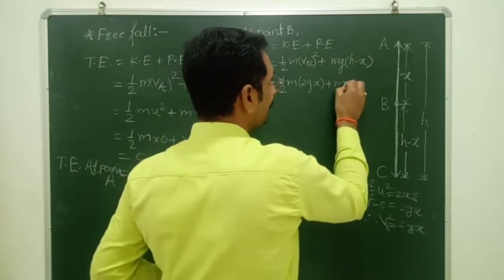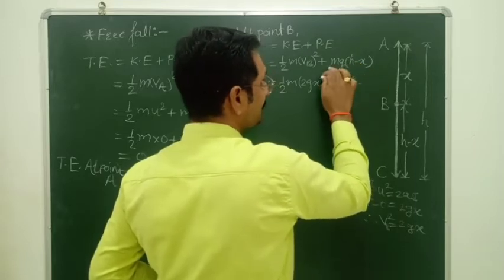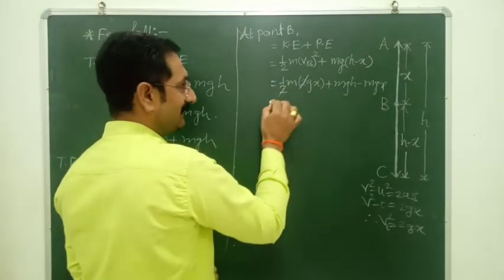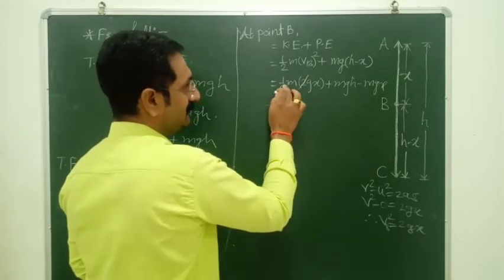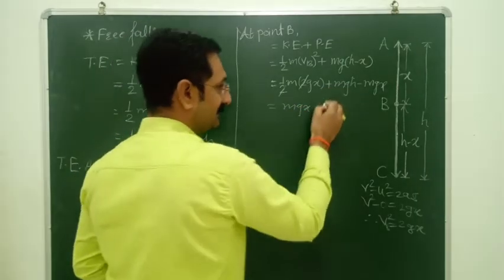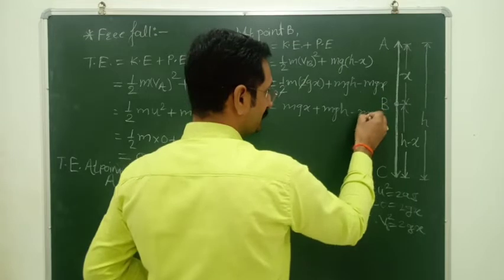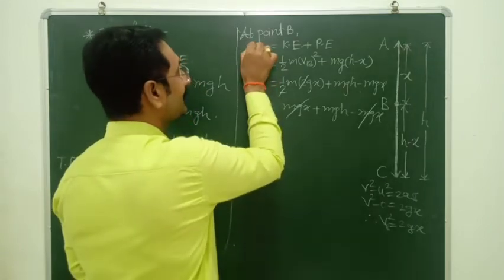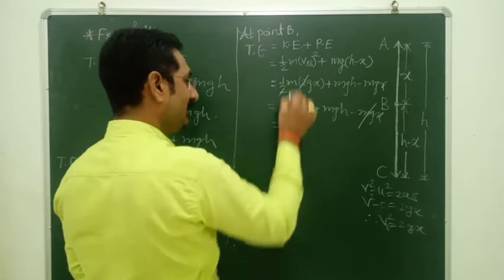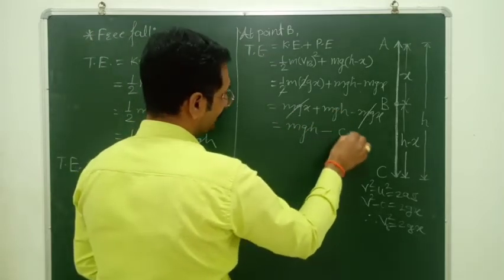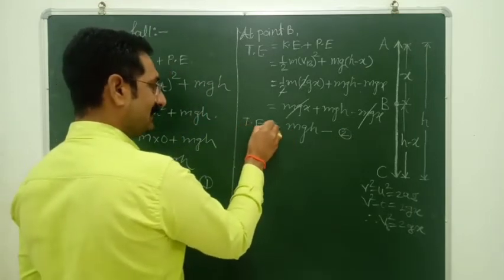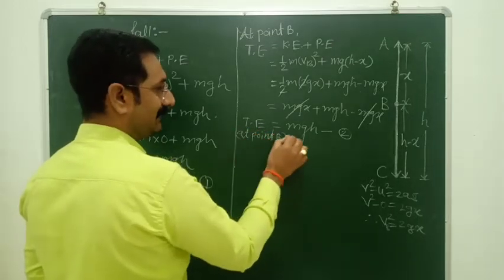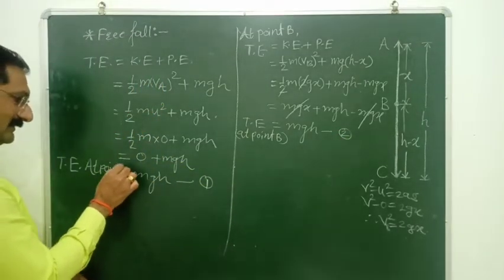So V_B² = 2gx. Total energy at B = one-half m·2gx + mg(H − x) = mgx + mgH − mgx. The mgx terms cancel, so total energy at point B = mgh. Thus equation second gives us total energy at point B = mgh.